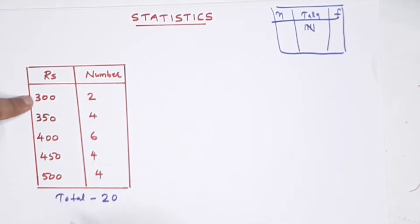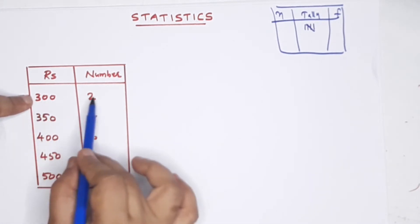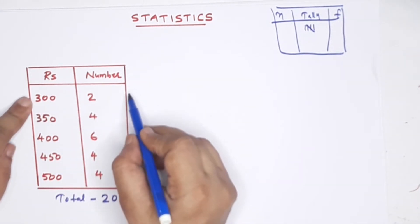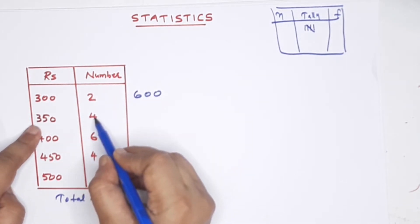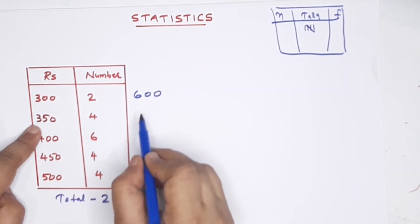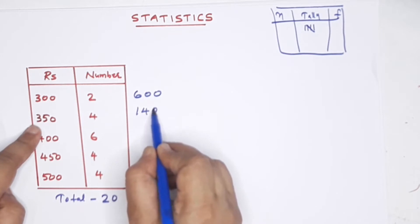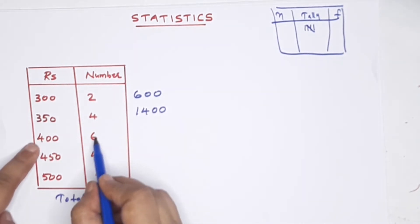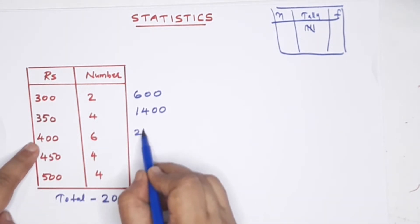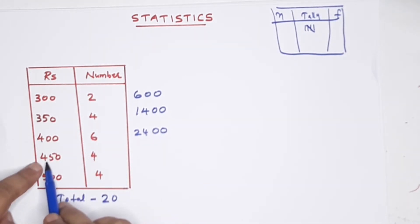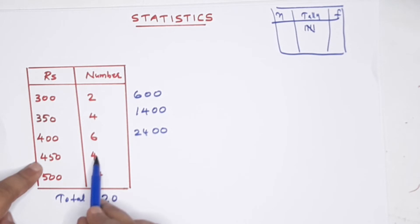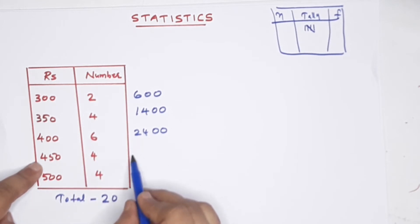If we add the total number and find the average: 300 into 2 is 600. 350 into 4: 350 into 2 is 700, 700 into 2 is 1,400. 6 into 4 is 24. Now we multiply: 450 into 4.